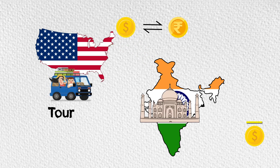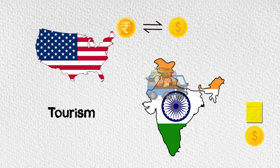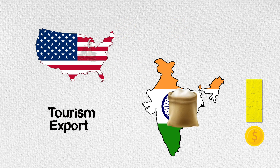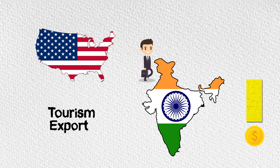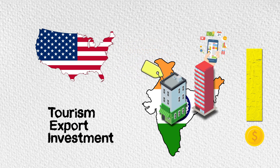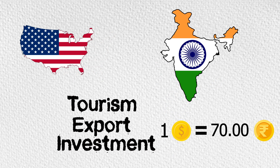Tourism: when Americans visit our country, they have to exchange their dollars for rupees. Export: when we export goods from our country, like spices or rice, dollars flow into our economy. Foreign investment: when Americans invest in real estate or tech industries, they have to purchase land or build their offices, for which they need capital. Based on the demand for dollars and the abundance of the same, an exchange price is decided.